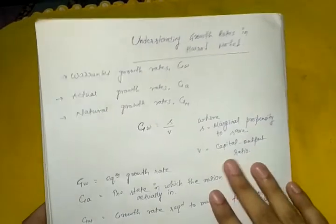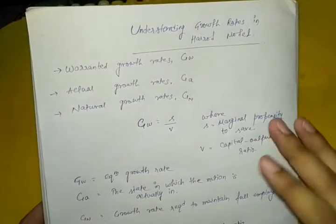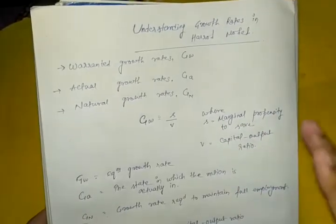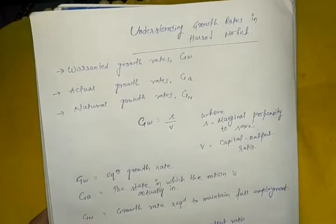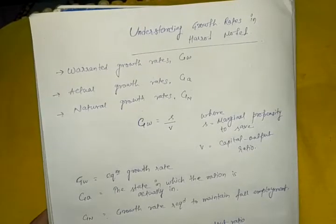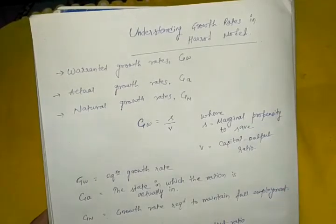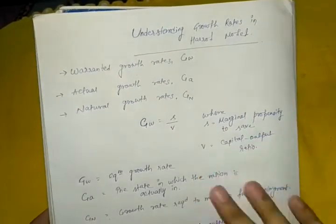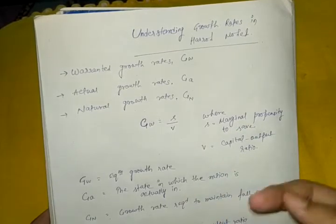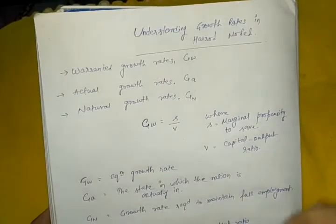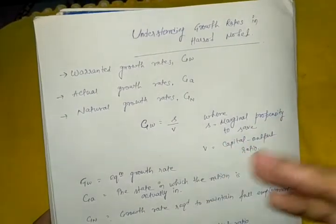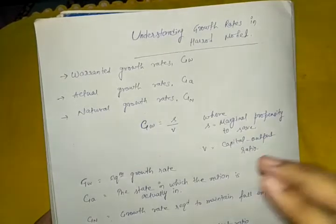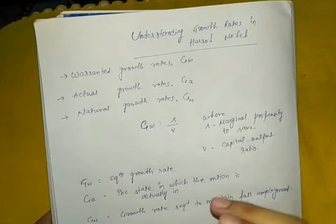I'm going to discuss these three growth rates in today's video. I hope you've seen my previous video — if not, click the card showing above on your screen, because in that video I discussed the difference between economic growth and economic development, which is very important. Harrod uses terms like warranted growth rate, actual growth rate, and natural growth rate so many times in his model.